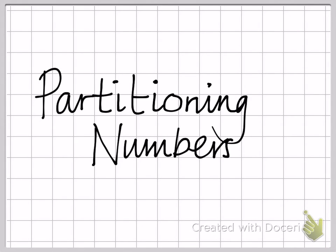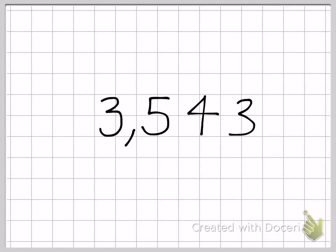Partitioning numbers just means breaking down a number so that you can see what each digit is worth. Take for example this number, 3543.